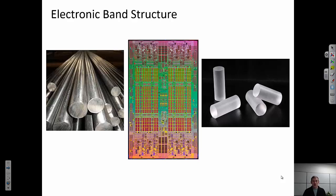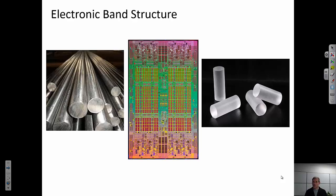We're going to continue talking about electronic energy bands in this video. We're going to talk about how we fill up these energy bands with the available valence electrons — the outermost energy electrons in the atom — and how this filling of electronic bands results in the electronic properties that we're familiar with: metallic, insulating, and semiconducting properties.